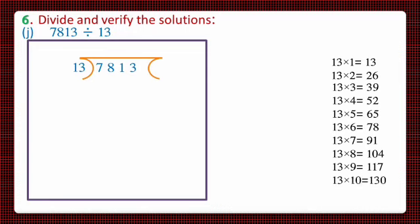First we'll consider the first two digits of the number to be divided, and that's 78. So we'll read the table of 13 up to 78, and we have to choose the value from the table which is less than or equal to 78. The value should not exceed 78.